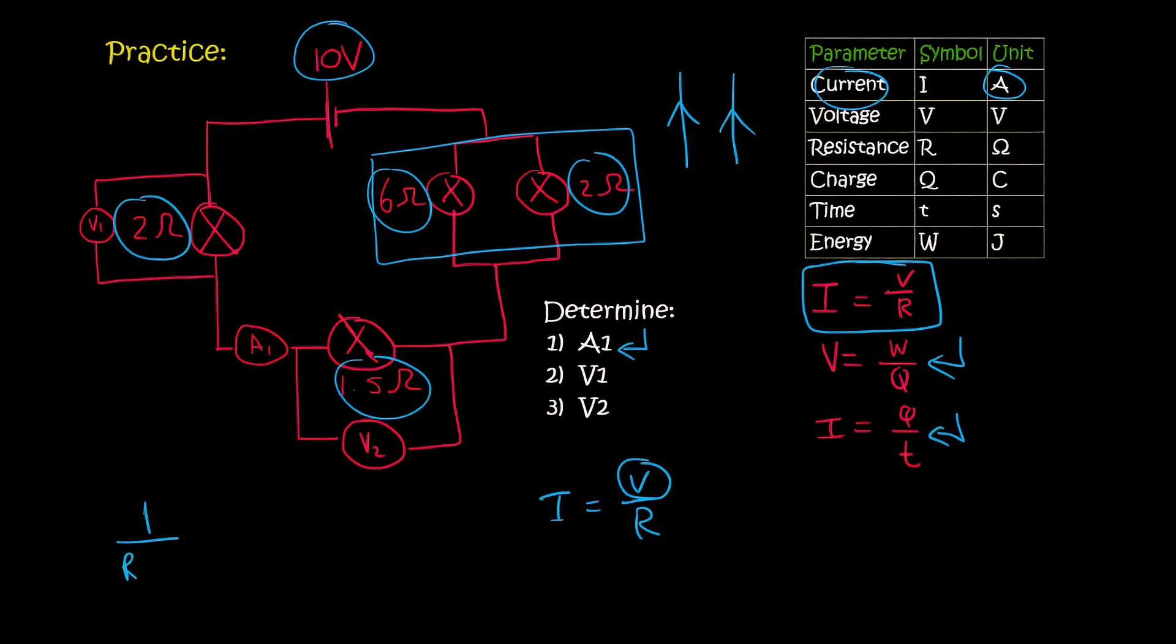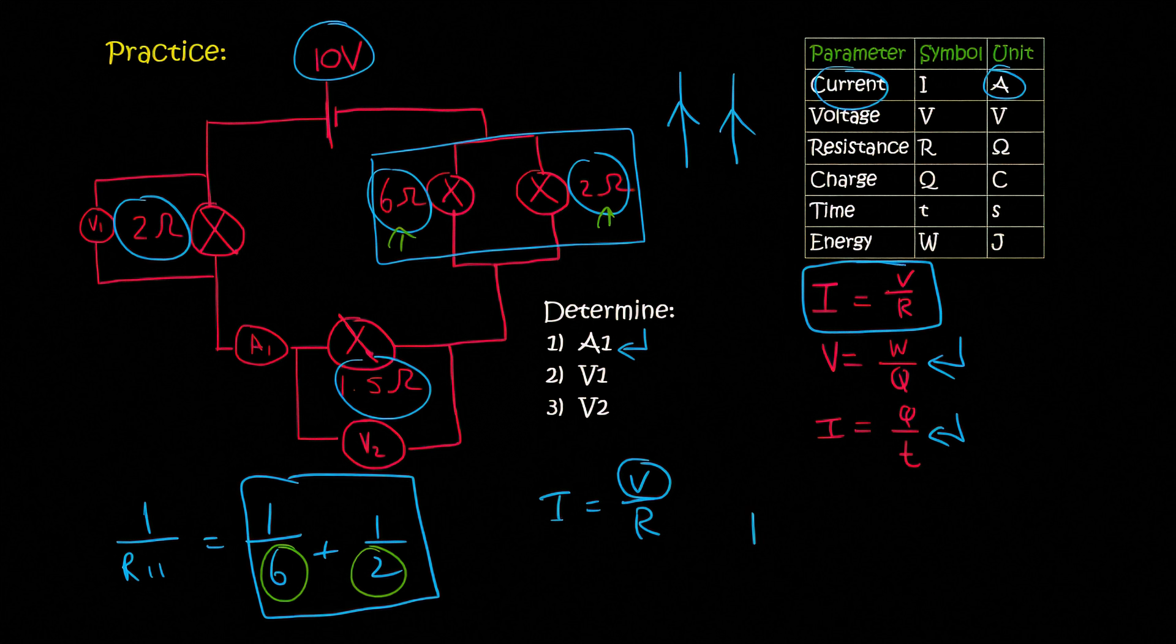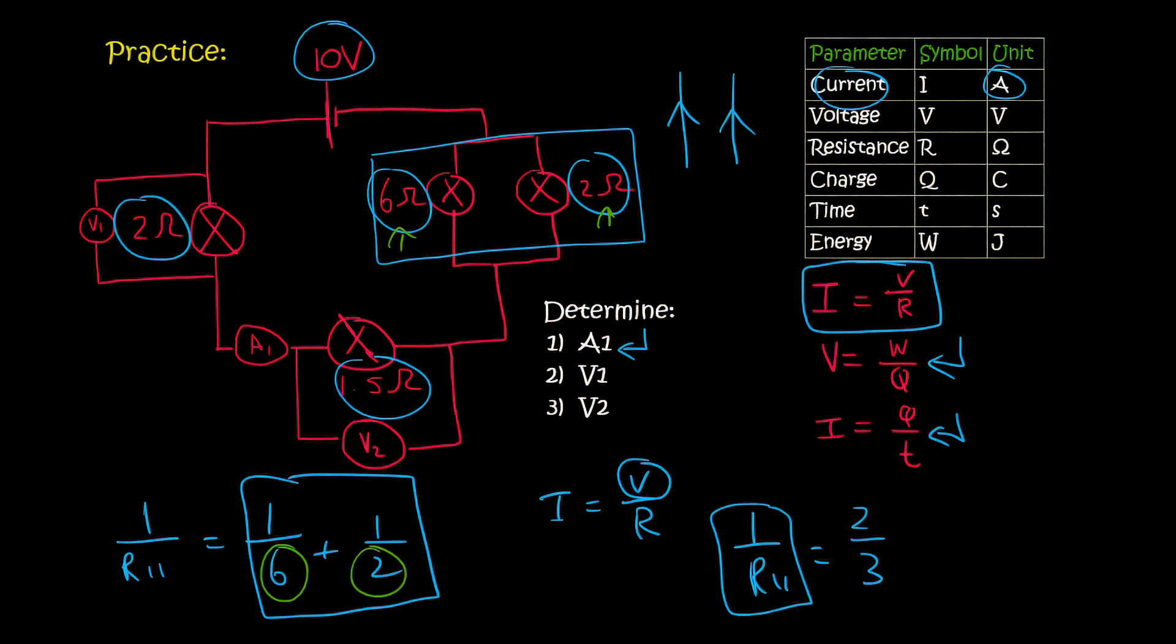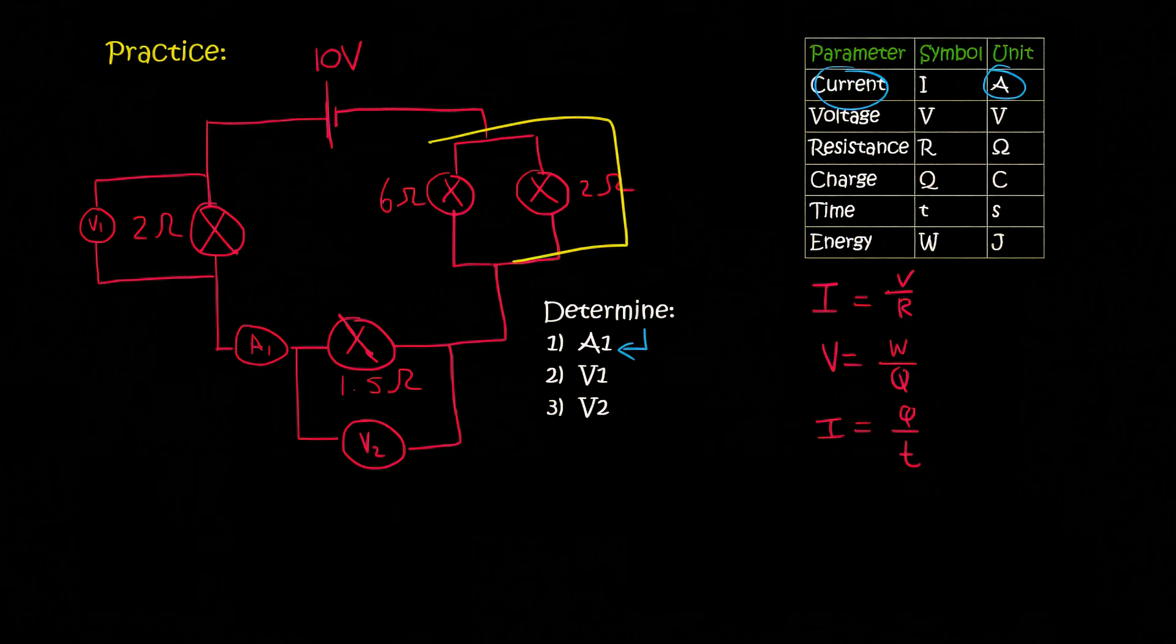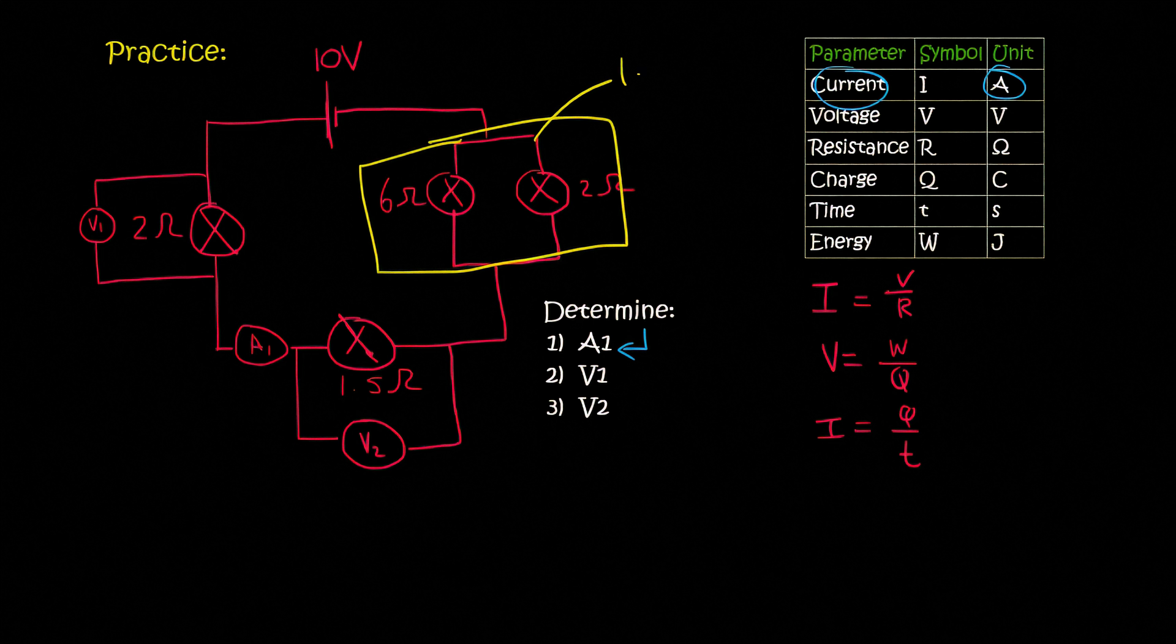Remember we said that 1 over R parallel is going to be equal to 1 over 6 plus 1 over 2. So the 6 and the 2 are what I got from the diagram. You then type this in on your calculator, and so 1 over R parallel will be equal to 2 over 3. And so then you just switch this upside down, and then you switch this side upside down. And so R parallel is 3 over 2. And in decimal form, that's 1.5.